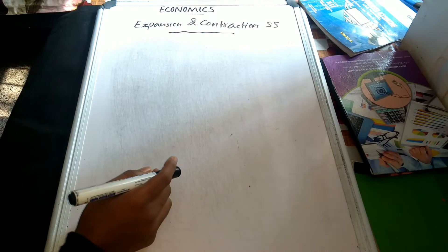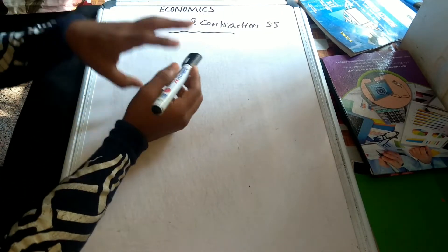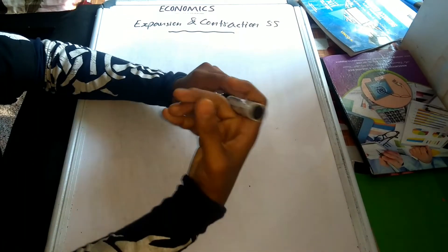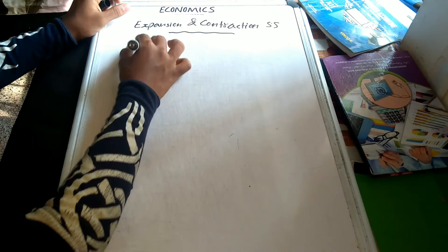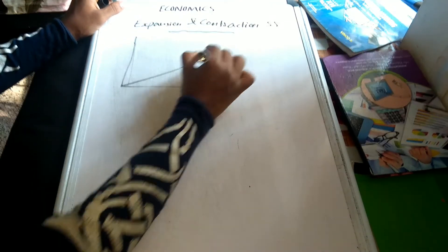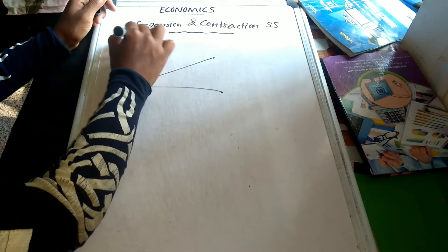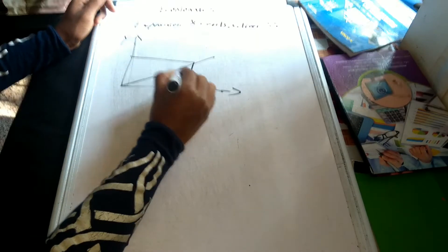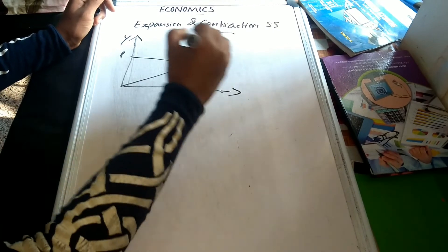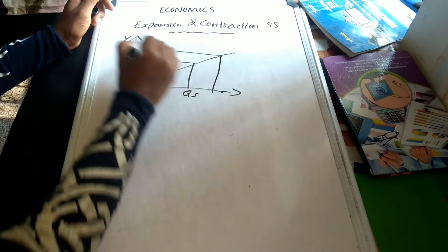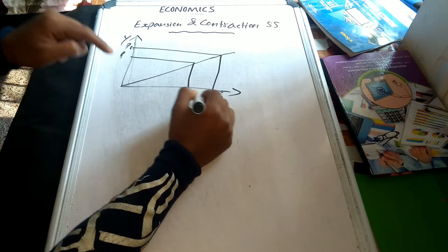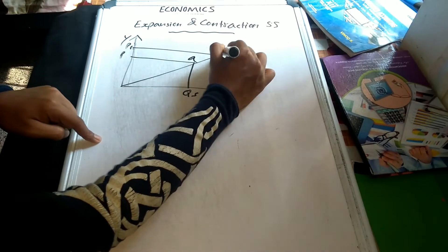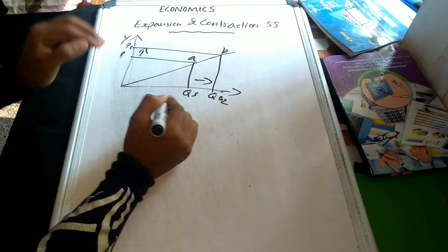So expansion and contraction of supply — expansion of supply is the same as we can get our product. We can get supply — price increase, so we can get the supply. XY axis, X axis — here is the point: price and quantity supply. Price increase, P1, quantity supply, Q2. That is how we can get the point — we can get the price expansion.